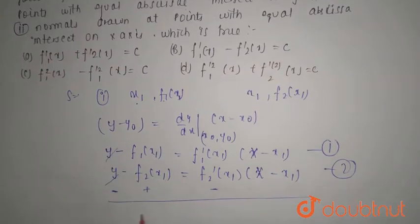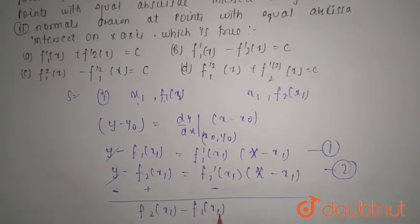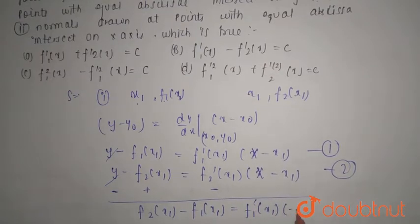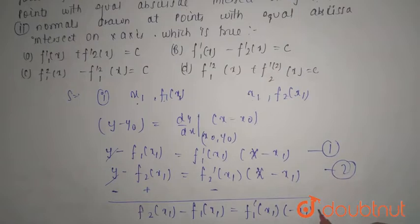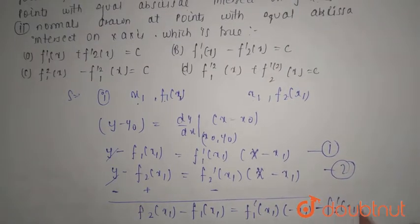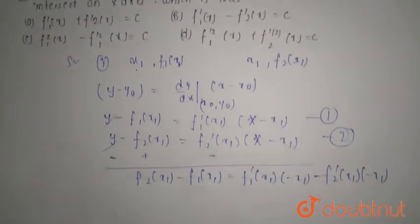So left out with f2(x1) minus f1(x1) equals f1'(x1) minus x1 by multiplication inside the bracket, minus f2'(x1) minus x1. This is by multiplication inside the bracket.